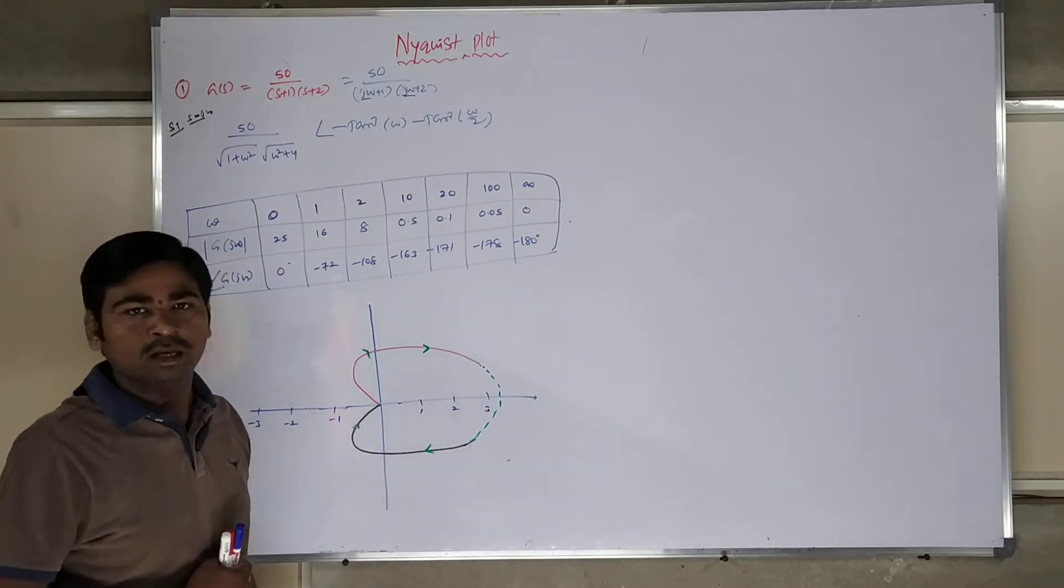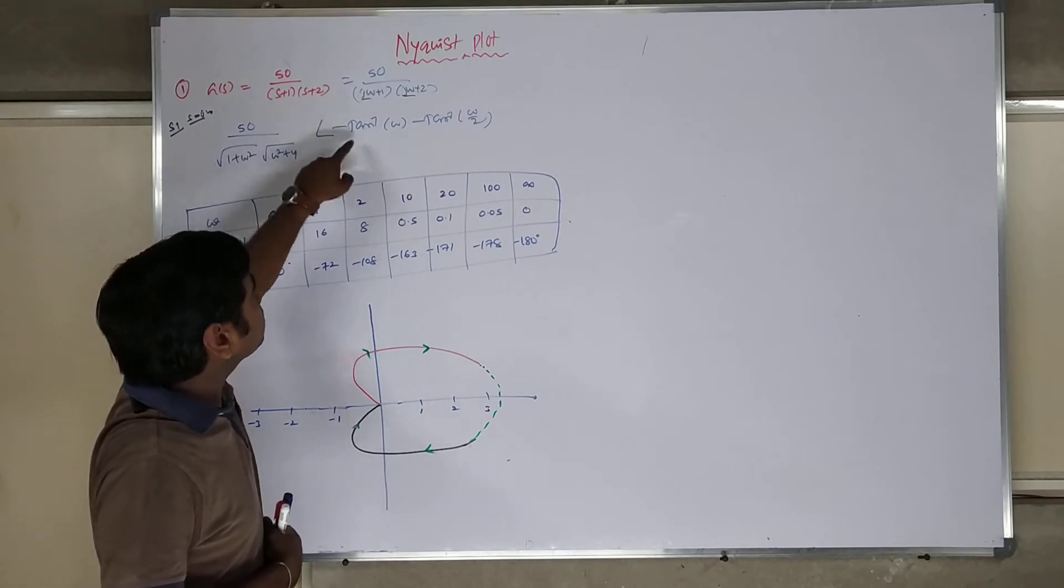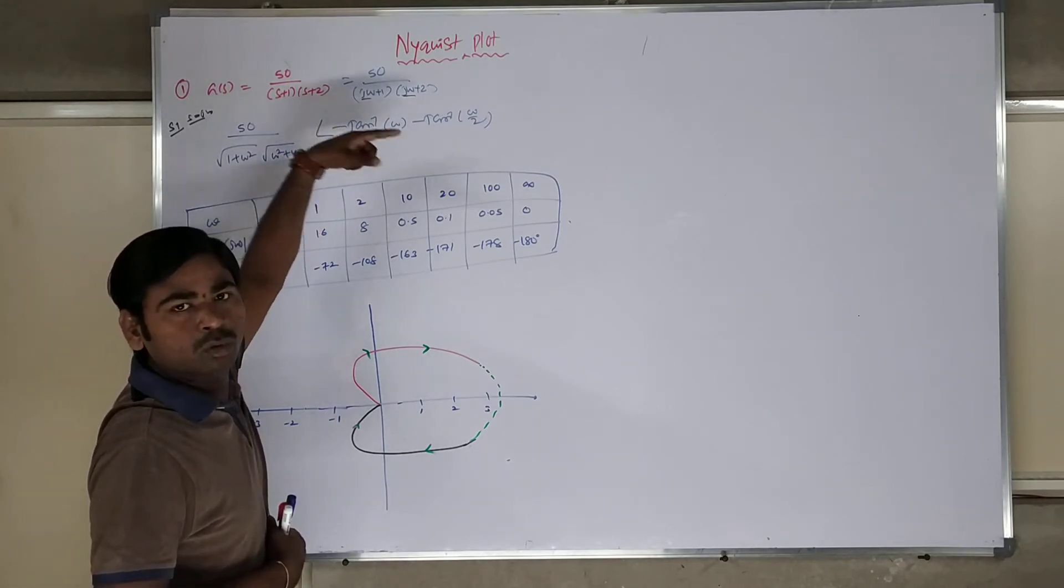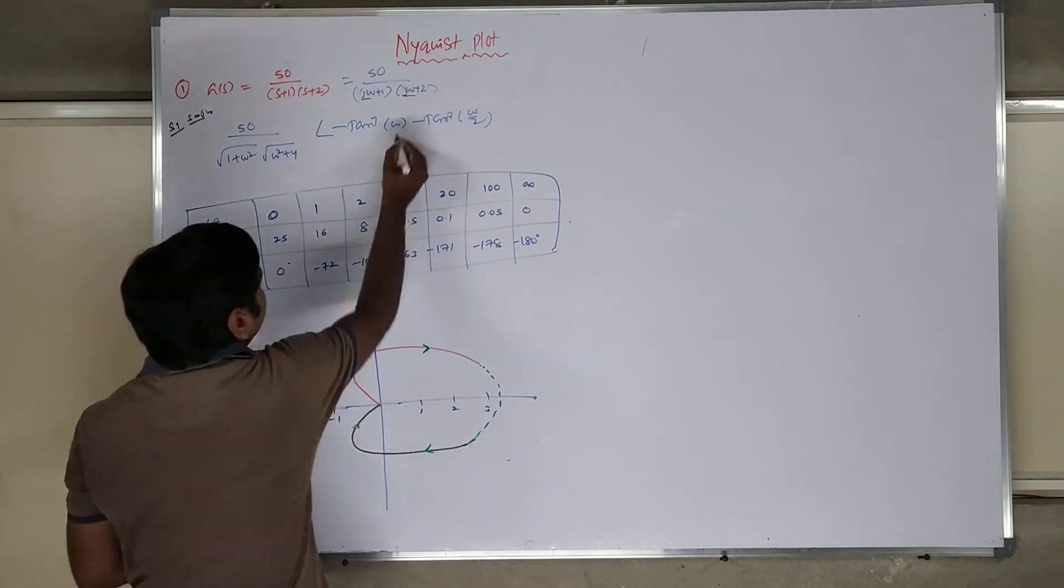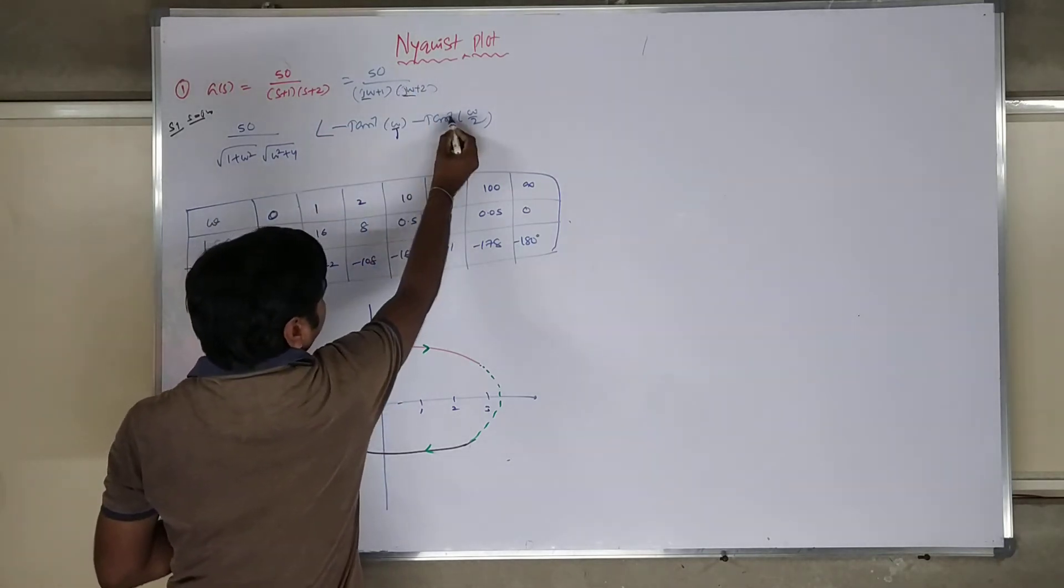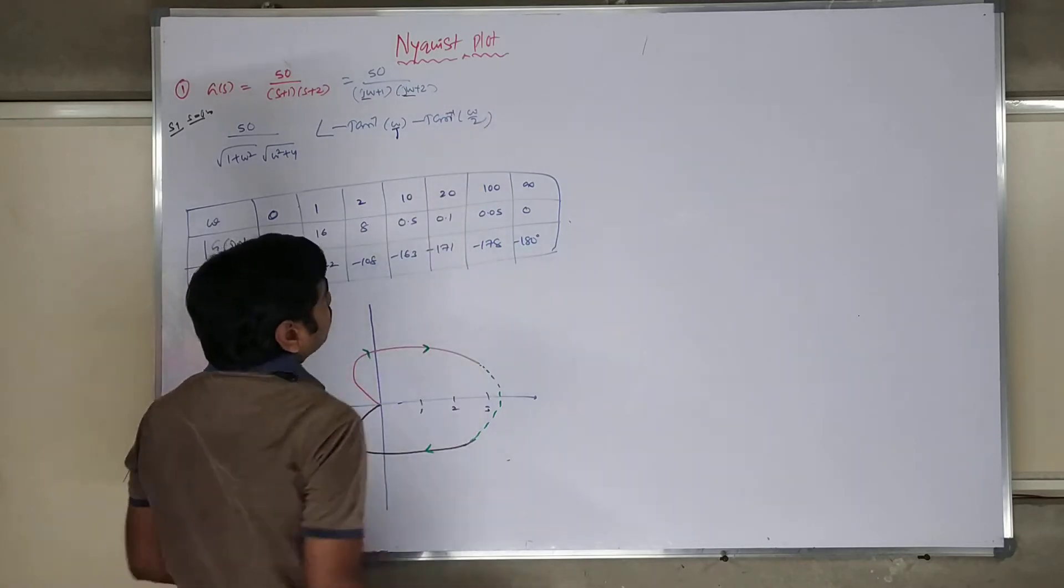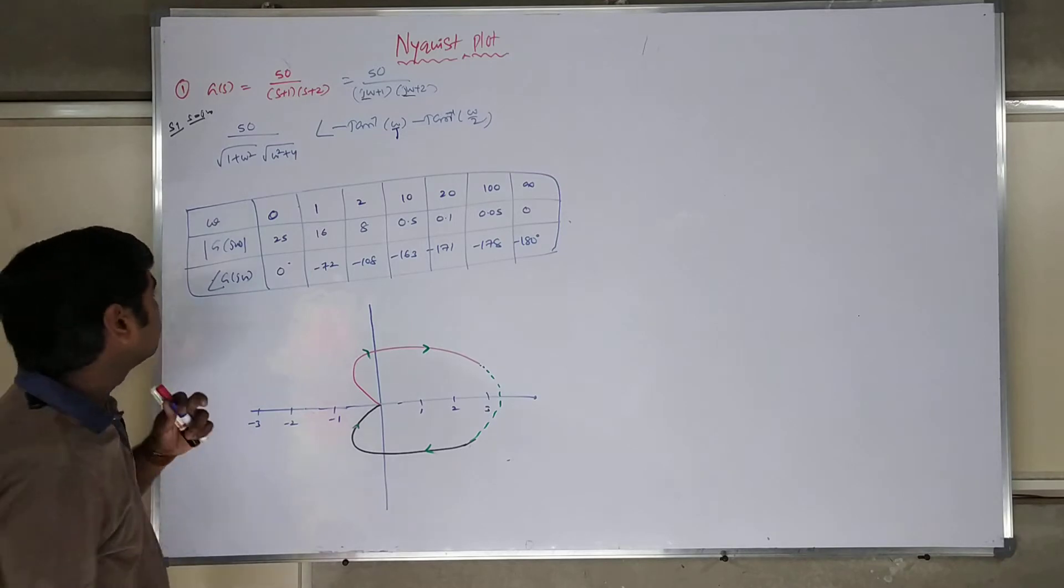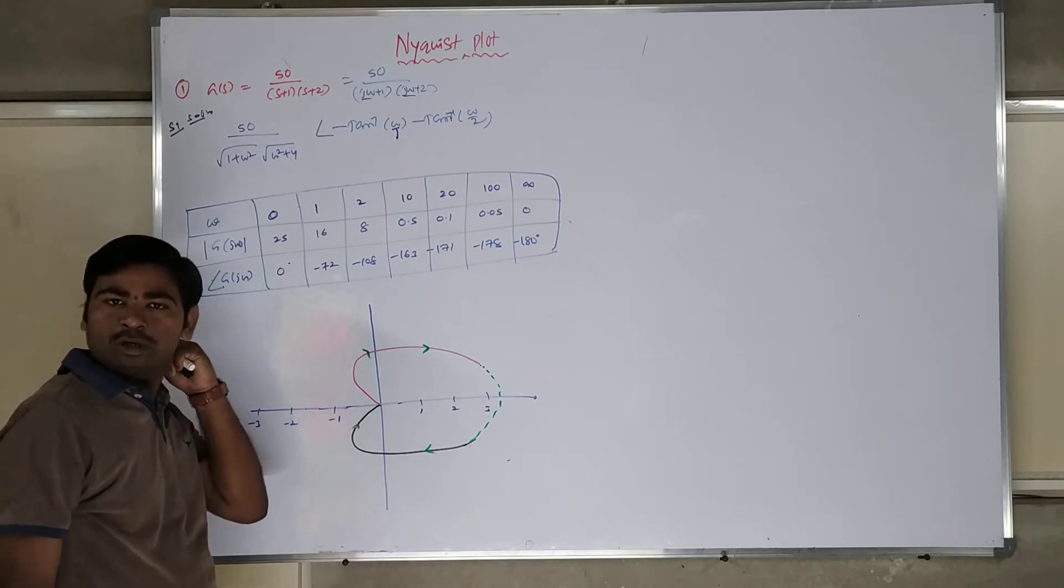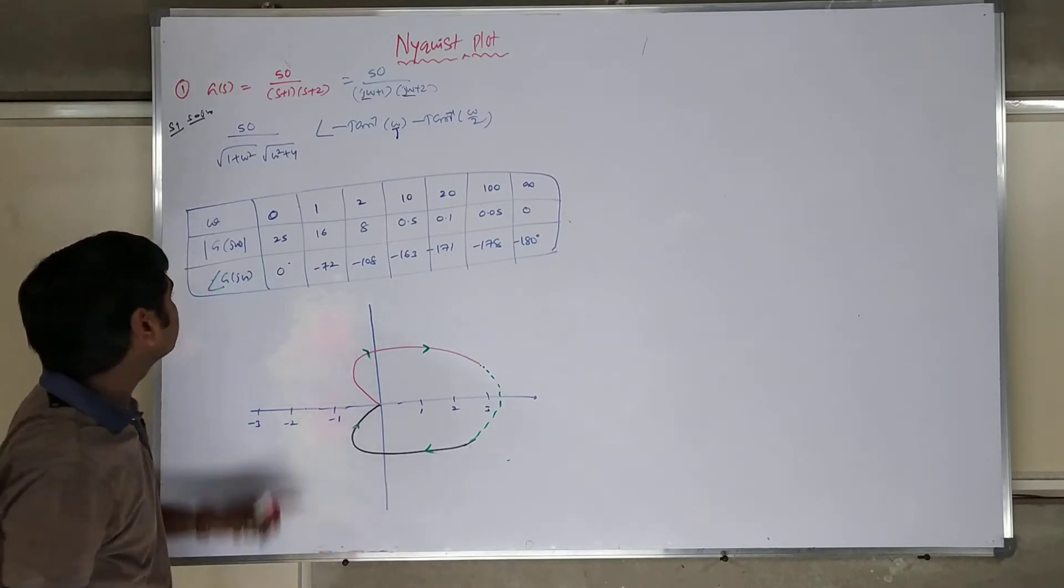After that, try to find the angle. Angle equal to minus tan inverse, because this term is 0. So minus tan inverse omega by 1. Next, this is also minus tan inverse omega by 2. That is the right thing. Corresponding that, I told you when you are finding the Nyquist polar plot curve, you need to change omega value.